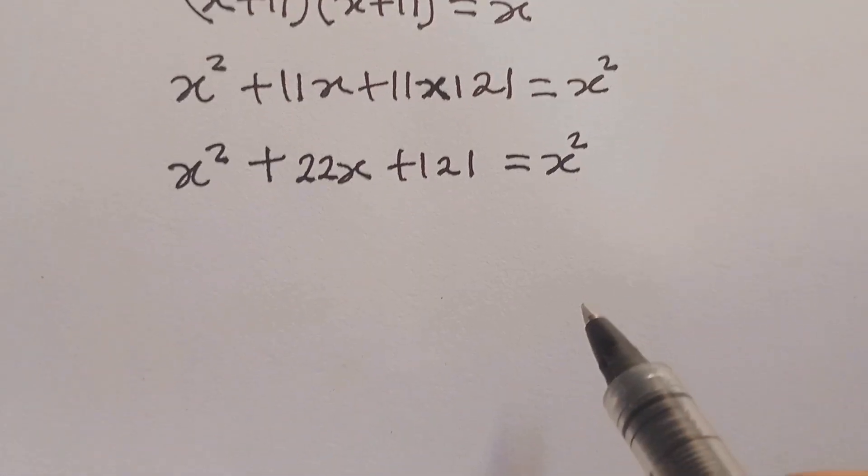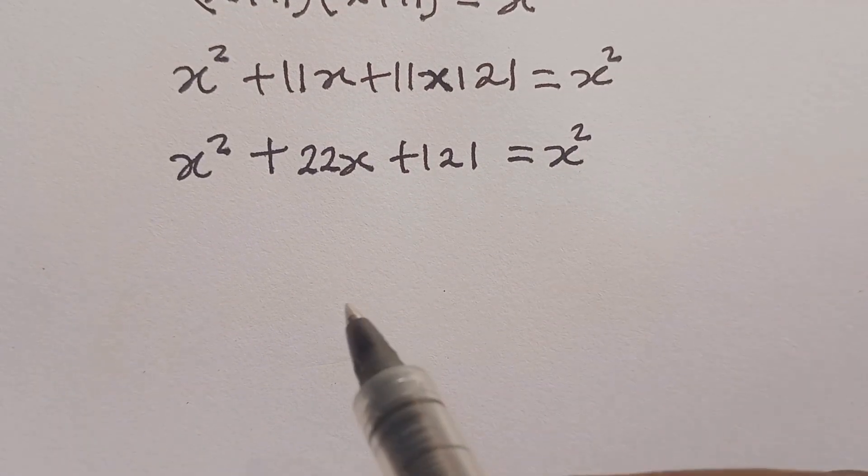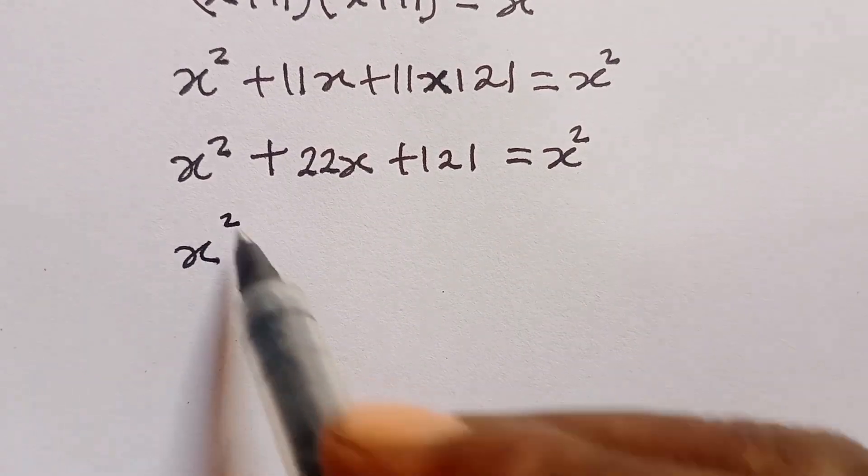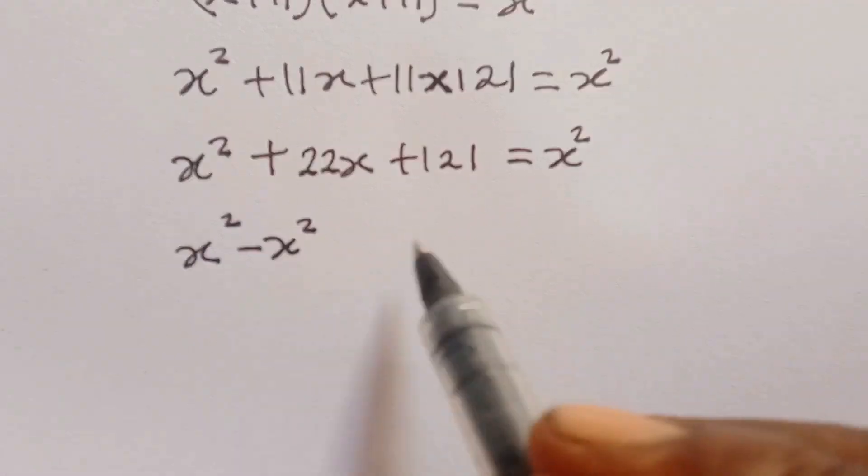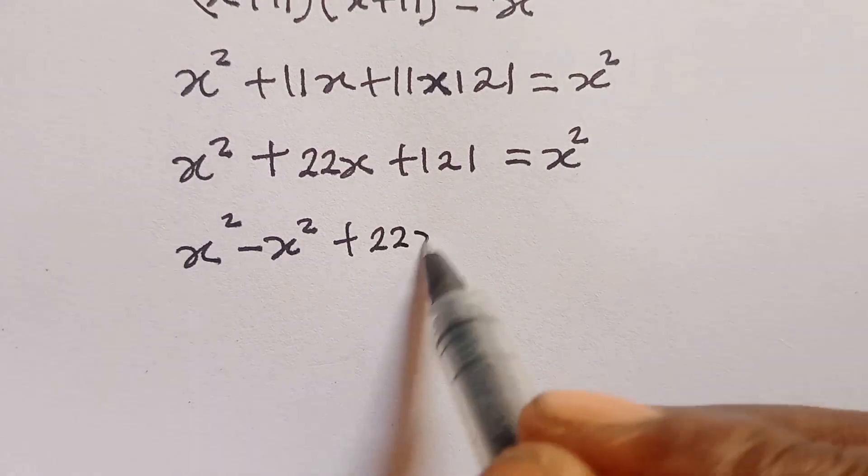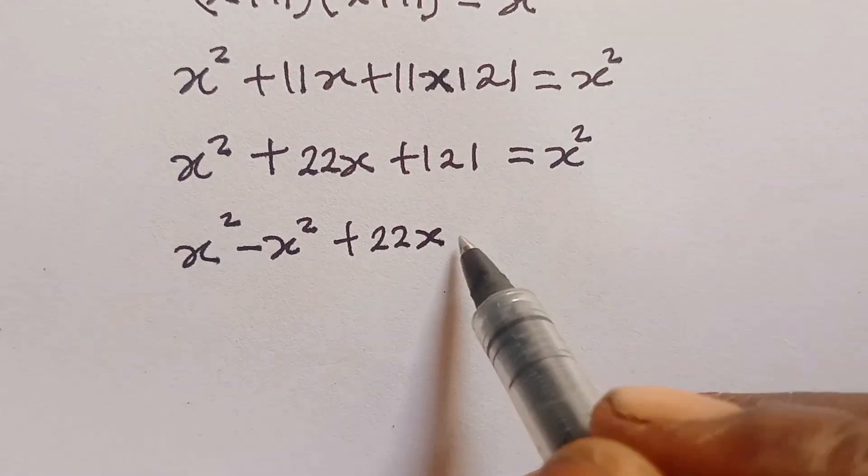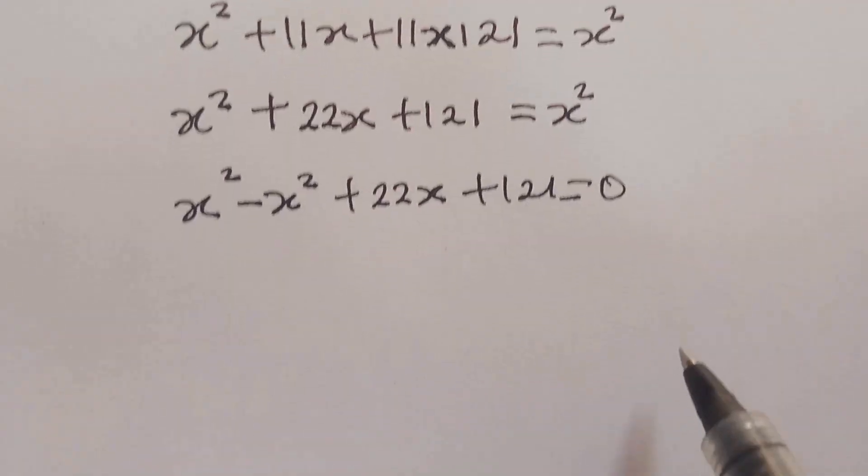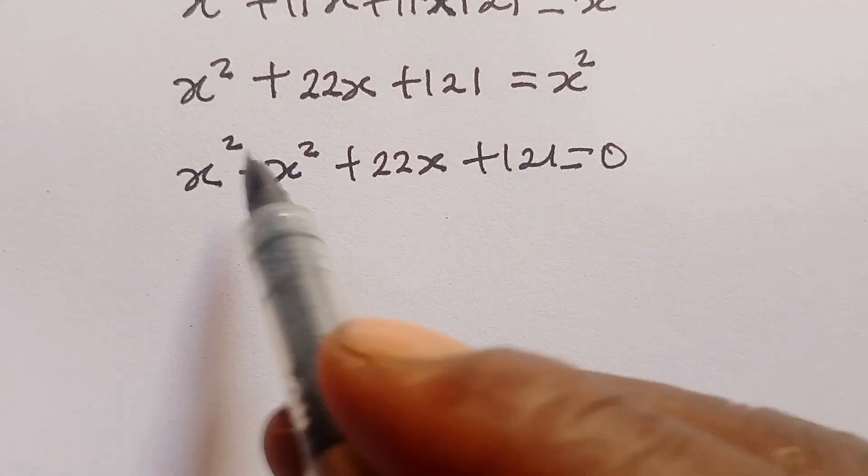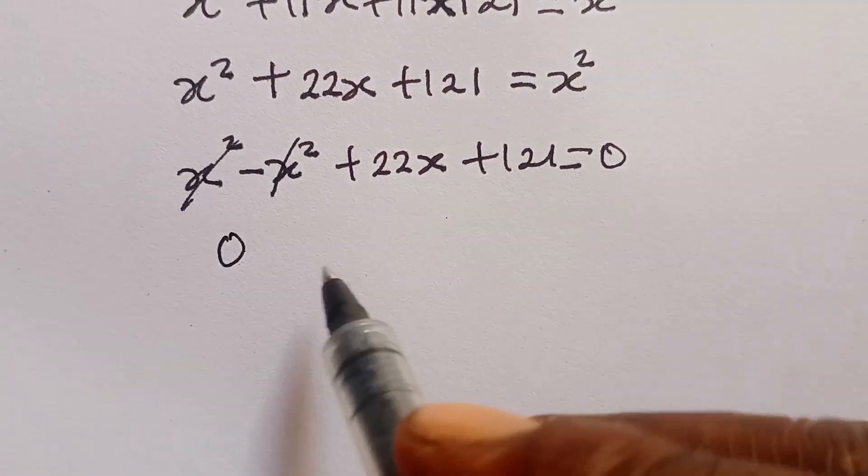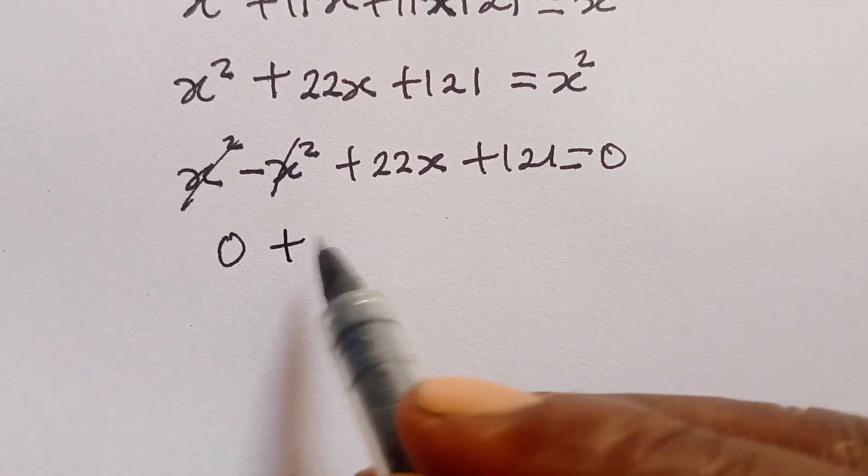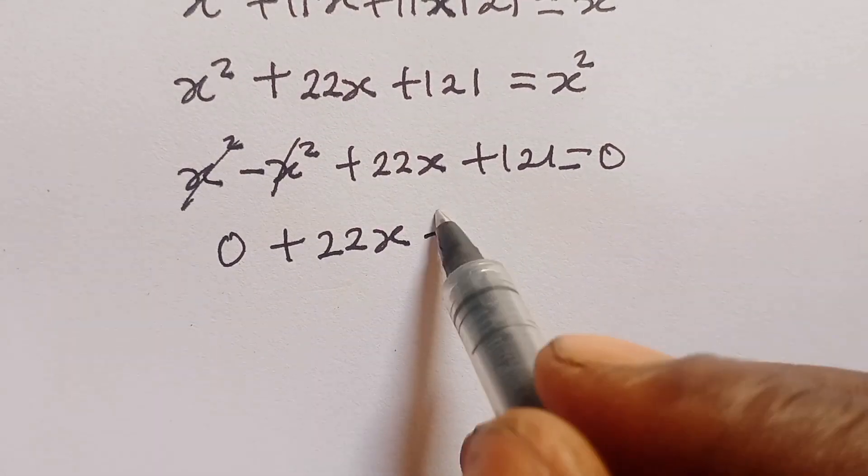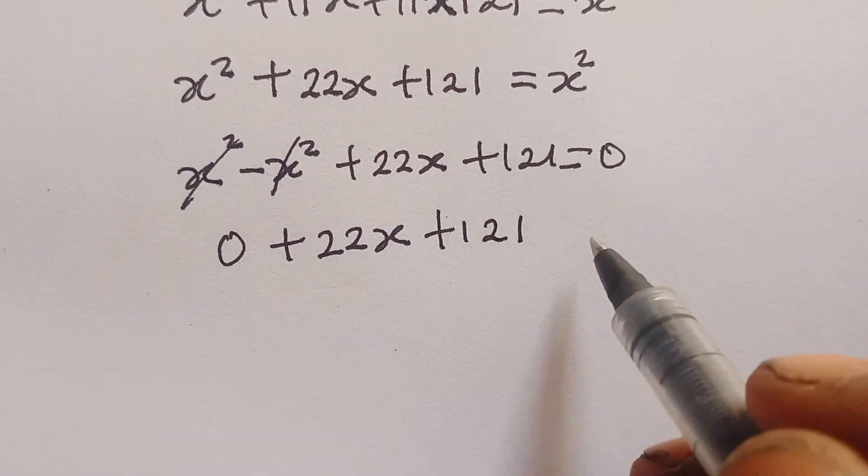Now, once you understand it up to this stage, the next thing to do is to take the x squared that I have at my right hand side to the left hand side. So, x squared minus x squared plus 22x plus 121 to now be equal to 0. x squared will cancel out x squared. We are having 22x plus 121 equal to 0.